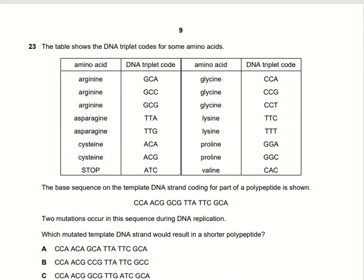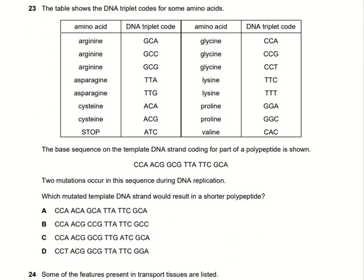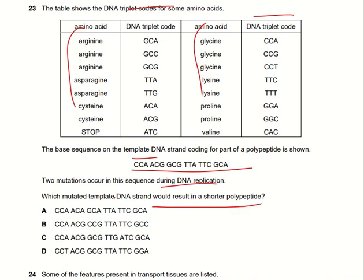A table shows DNA triplet codons for some amino acids, along with the base sequence of the template DNA strand coding for a particular polypeptide. Two mutations occur in the sequence during DNA replication. A shorter polypeptide can only be produced if a mutation leads to production of a stop codon. If the stop codon appears anywhere in the sequence, it will stop the polypeptide chain and result in a shorter polypeptide.